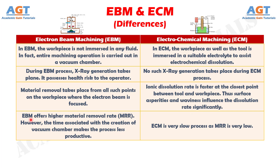Number 9: Electron beam machining offers a higher material removal rate. However, the time associated with the creation of the vacuum chamber makes the process less productive, whereas electrochemical machining is a very slow process as the material removal rate is very low.